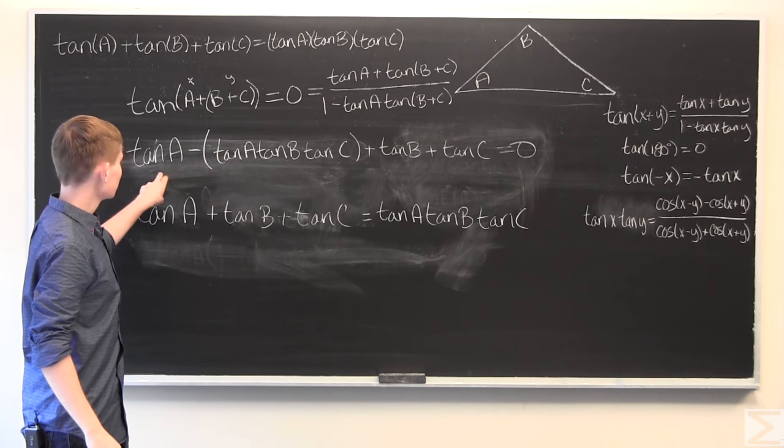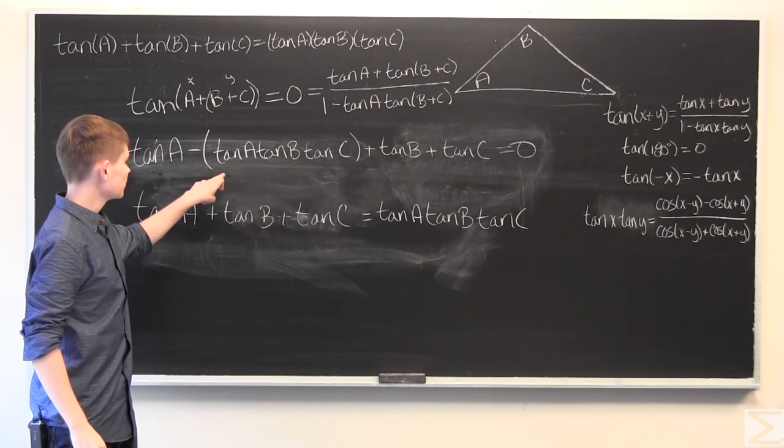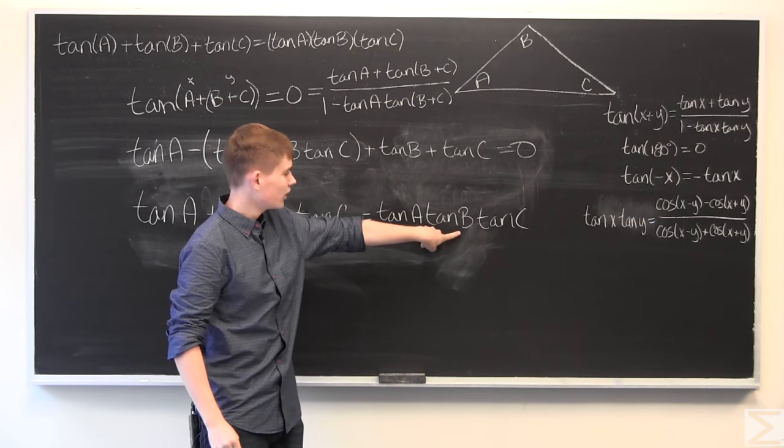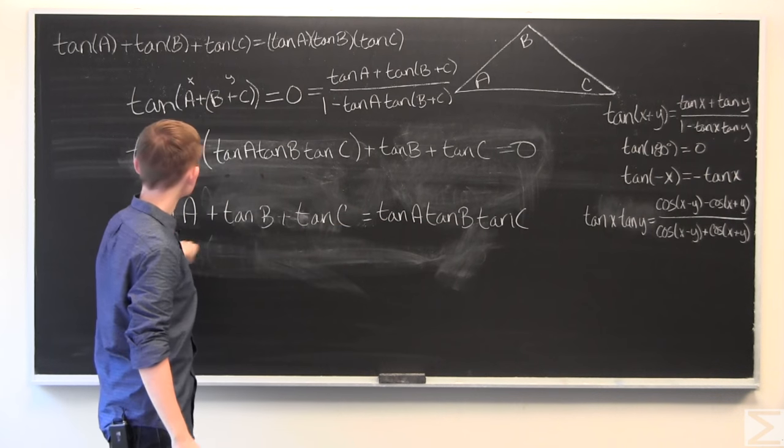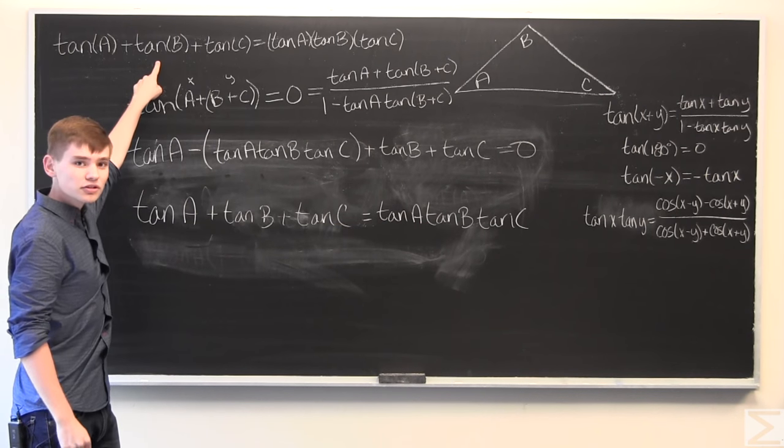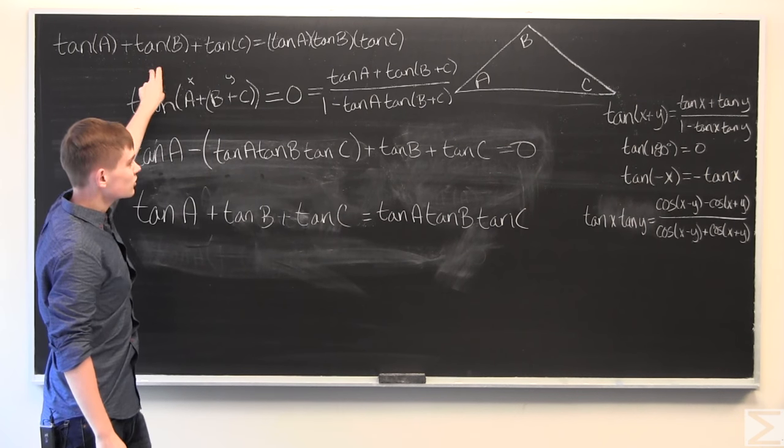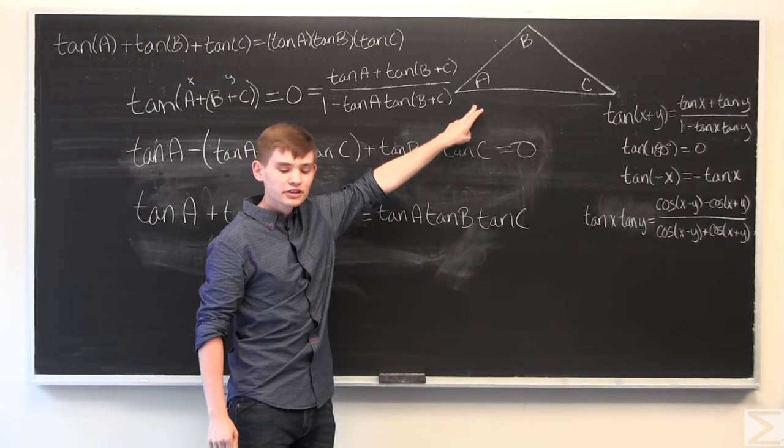All right. So, all I did was I distributed the tangent A, and then we got this product, and I added that to both sides, and we get exactly what we are looking for. So, we have successfully shown that this statement is true for a non-right triangle.